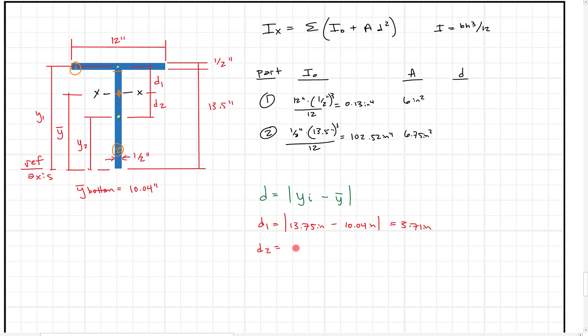And D2 is going to be similar. But what we'll do here is we'll say, well, the YI, in this case, Y2 is just going to be 13.5 over two or 6.75 inches minus 10.04 inches. And that's going to, again, we'll take the absolute value of that. And the value we get for that is 3.29 inches. So I'm just going to transfer those up here.